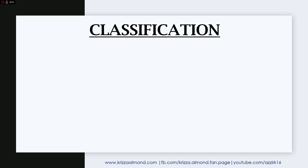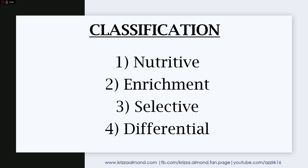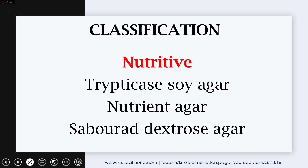Media are classified into the following: nutritive, enrichment, selective, and differential. Nutritive culture media contain nutrients that support growth of most non-fastidious organisms without favoring the growth of a particular organism. Non-fastidious means organisms that do not need any special nutrient or substance for their growth. Examples include trypticase soy agar and nutrient agar, both used for bacterial organisms.